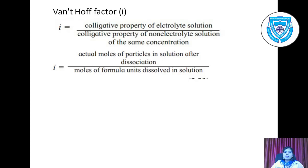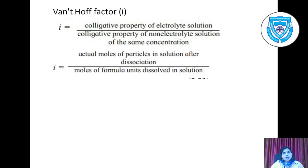Now we look at the Van't Hoff factor i, which equals the colligative property of an electrolyte solution divided by the colligative property of a non-electrolyte solution of the same concentration. Colligative properties differ between electrolytes and non-electrolytes because electrolytes dissociate nearly completely, giving more particles, whereas non-electrolytes dissociate to a very small extent, giving fewer particles. The Van't Hoff factor i is also the ratio of actual moles of particles in solution after dissociation to moles of formula units dissolved.